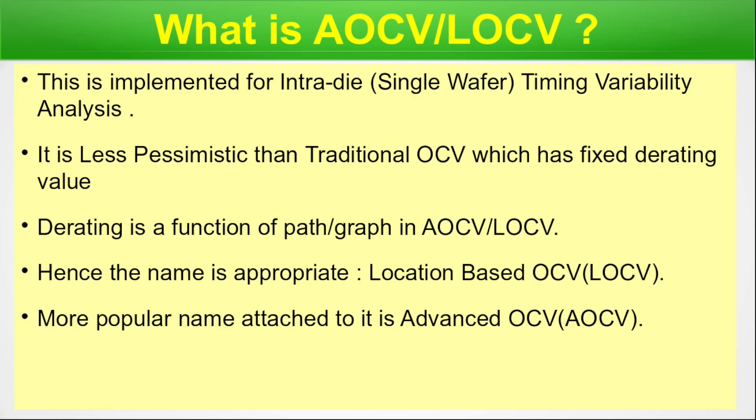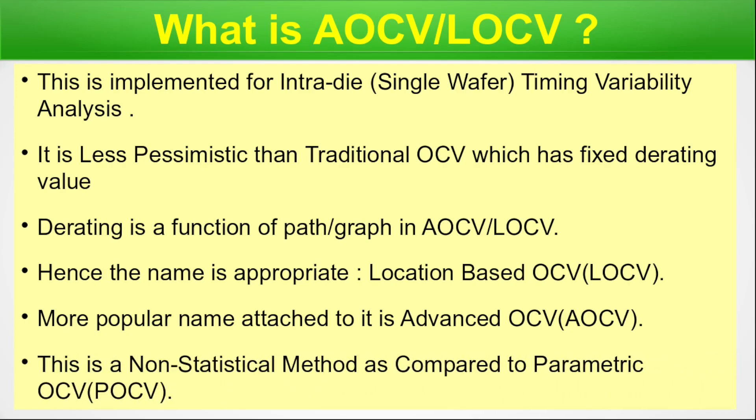In the industry, the less common name is LOCV and the more common name is AOCV. AOCV is a non-statistical method, as compared to Parametric OCV, i.e., POCV, which was discussed in the last Q&A episode and is a statistical method. AOCV is an advanced version of the on-chip variation approach where derating variation is considered depending upon the path traversing from one end of the wafer to the other.